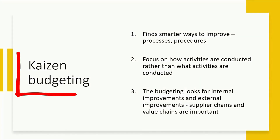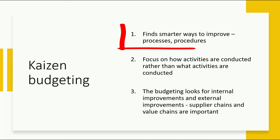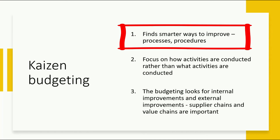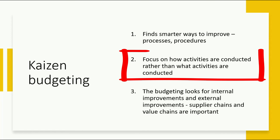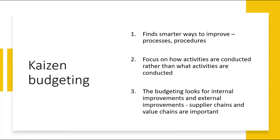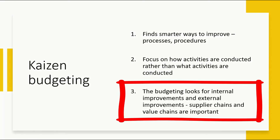Kaizen budgeting finds smarter ways to improve processes and procedures. It focuses on how activities are conducted rather than what activities are conducted. The budgeting looks for internal improvements and also external improvements such as supply chains and value chains.